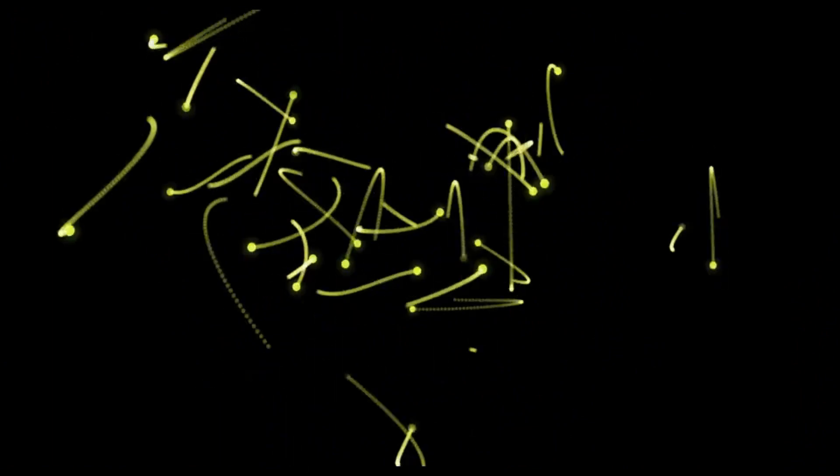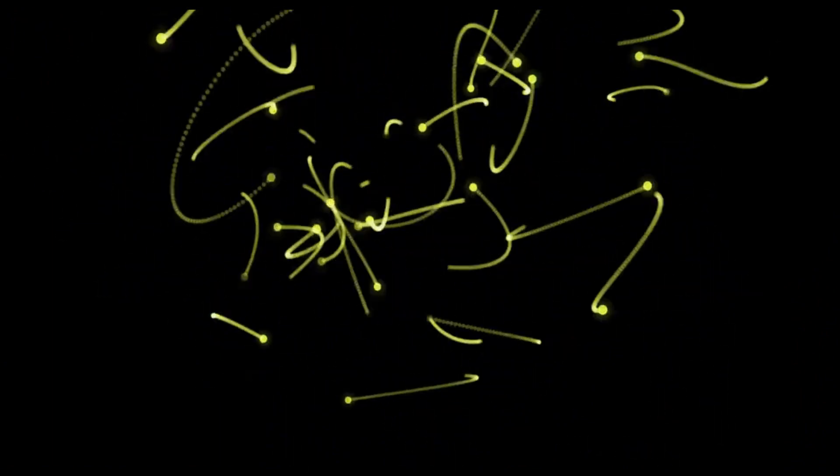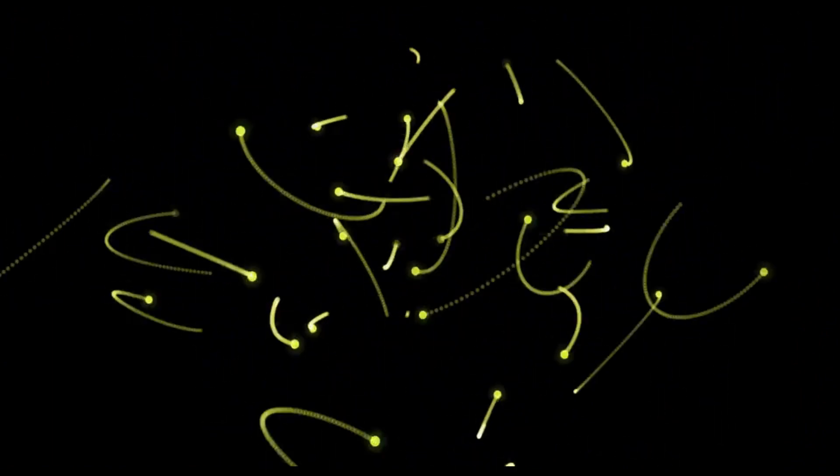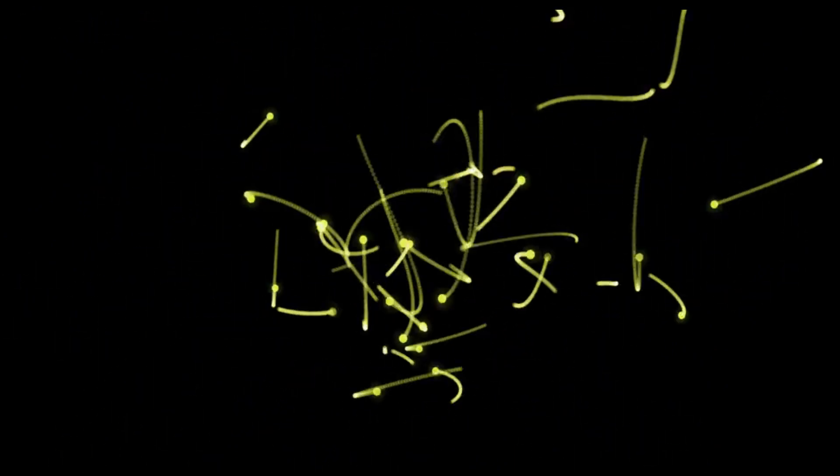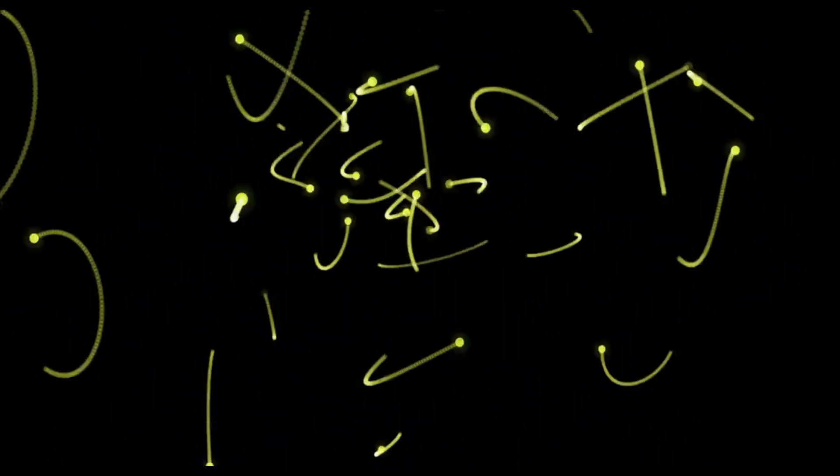So, as you can see, spin is a very important property of subatomic particles that determines their magnetic behavior, their quantum statistics, and their collective behavior. Spin is also related to other properties of subatomic particles, such as charge, mass, and interactions. For example, spin is involved in the electromagnetic force between charged particles, the weak force between quarks and leptons, and the strong force between quarks and gluons.